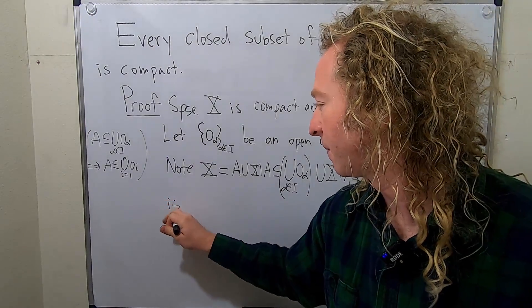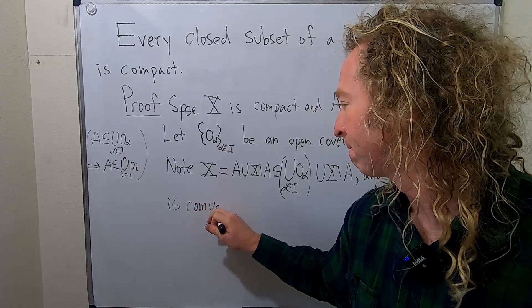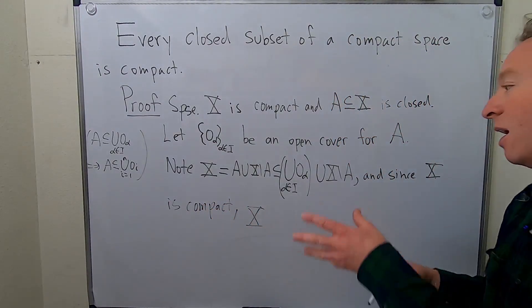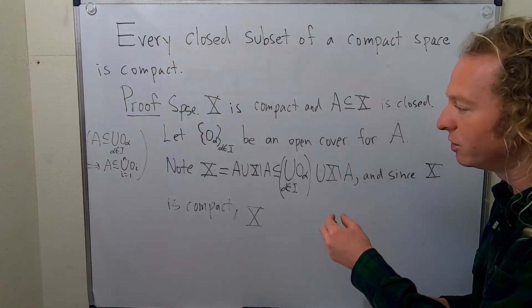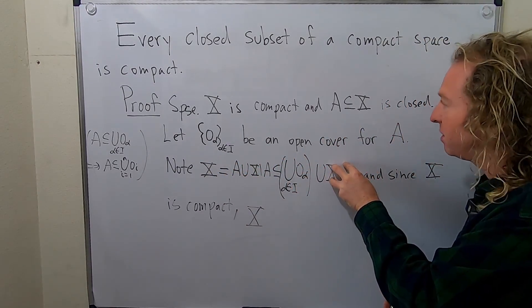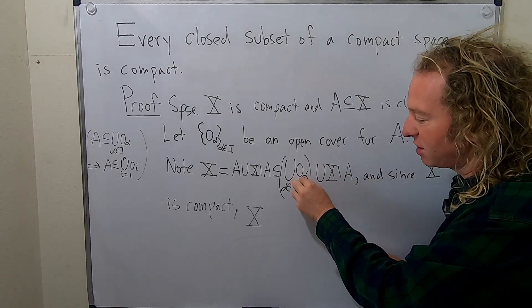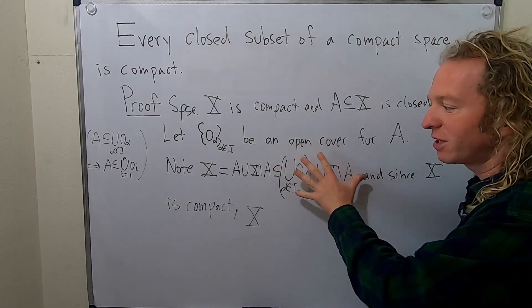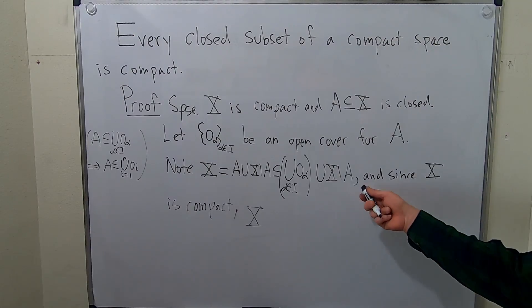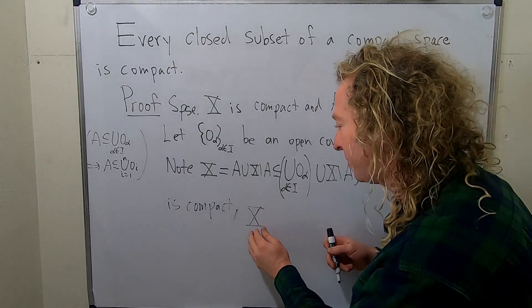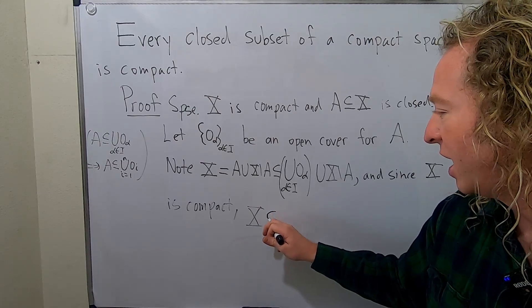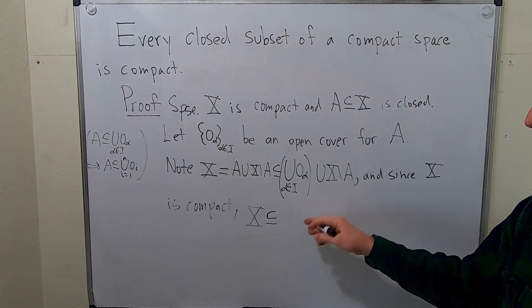And since X is compact, we have that capital X, and again, I probably should have written more, but I'm saying it in words. So X is contained in this union. This is open because A is closed. Each of these is open. So we have a union of open sets that's covering A. So we should be able to find a finite sub cover. And so since X is compact, we have that X is contained in the union.